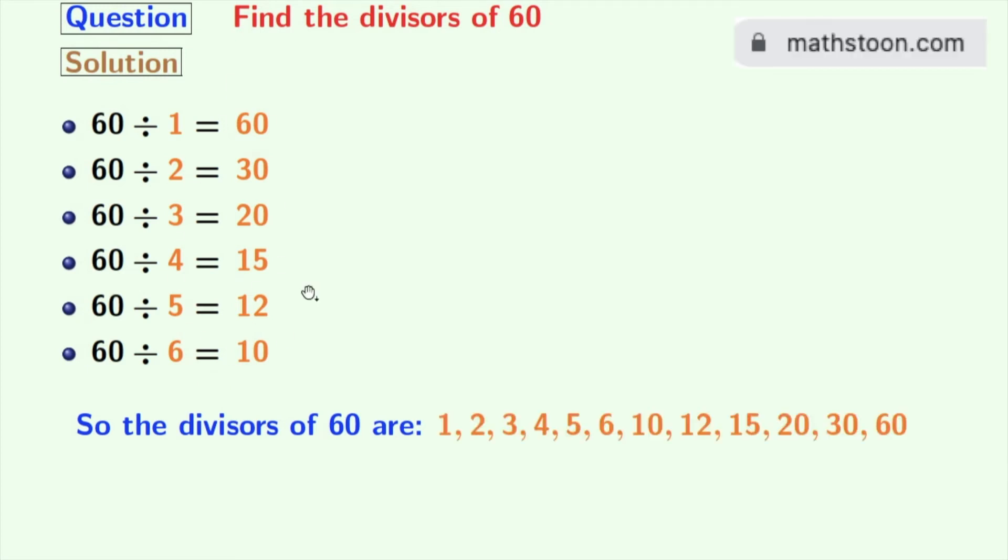These numbers are 1, 2, 3, 4, 5, 6, 10, 12, 15, 20, 30 and 60. So the total number of divisors of 60 is 12.